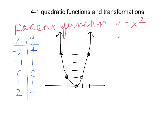Just like with our absolute value functions, there's still a vertex, which is at the bottom of my parabola. There is an axis of symmetry that cuts my parabola in half. And now parabolas can have minimums and maximums.